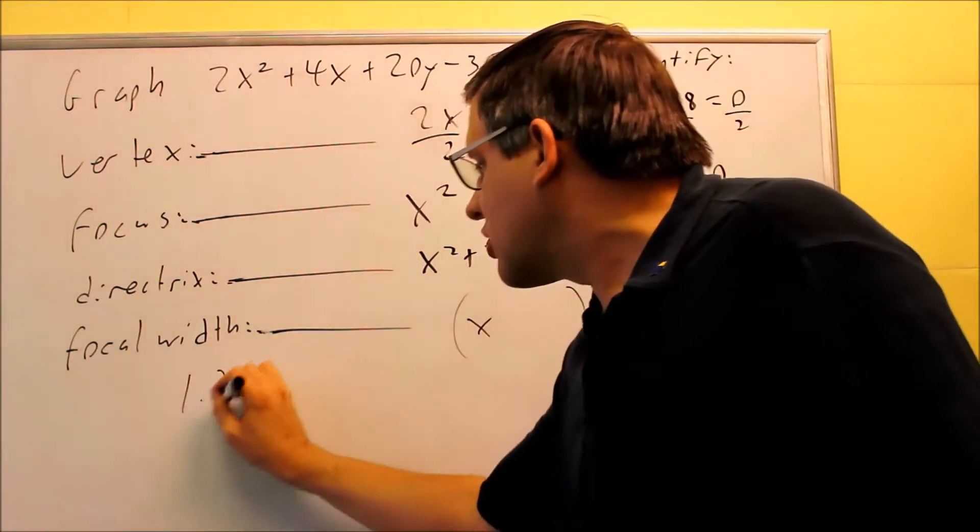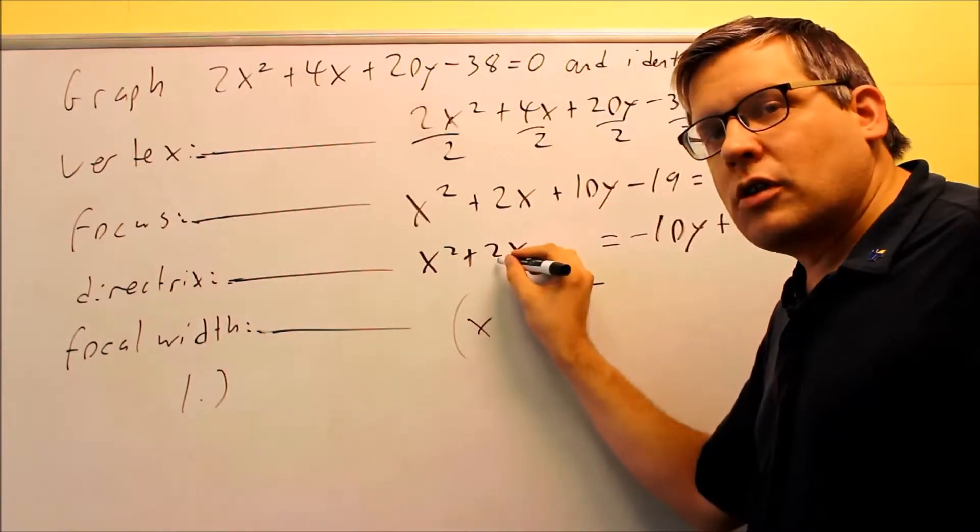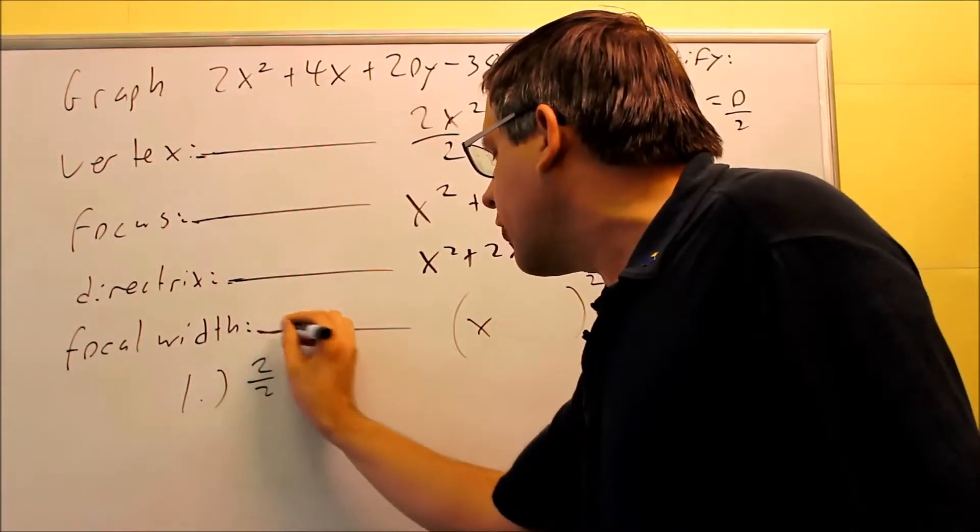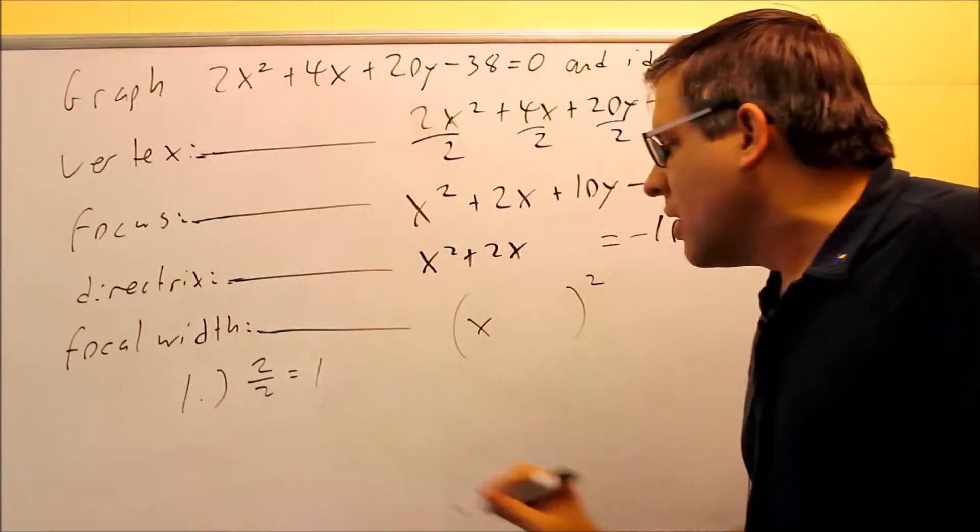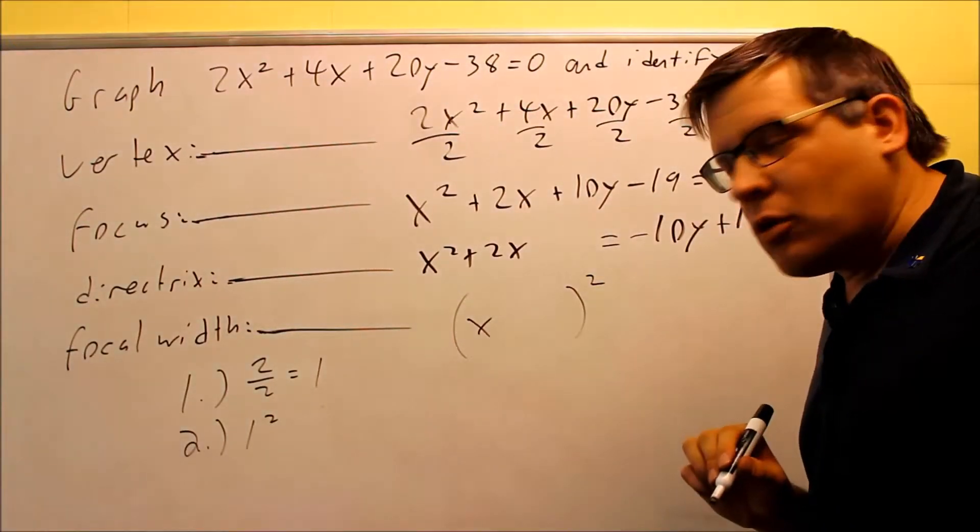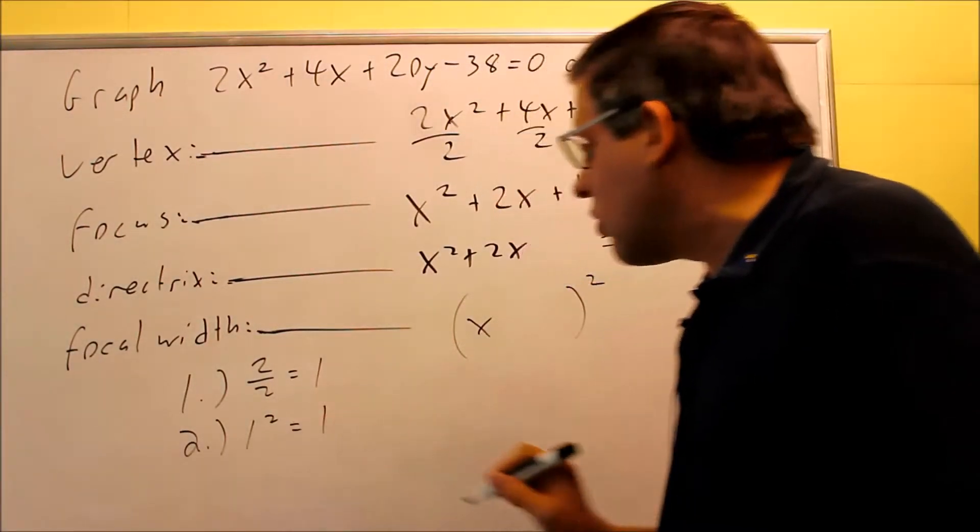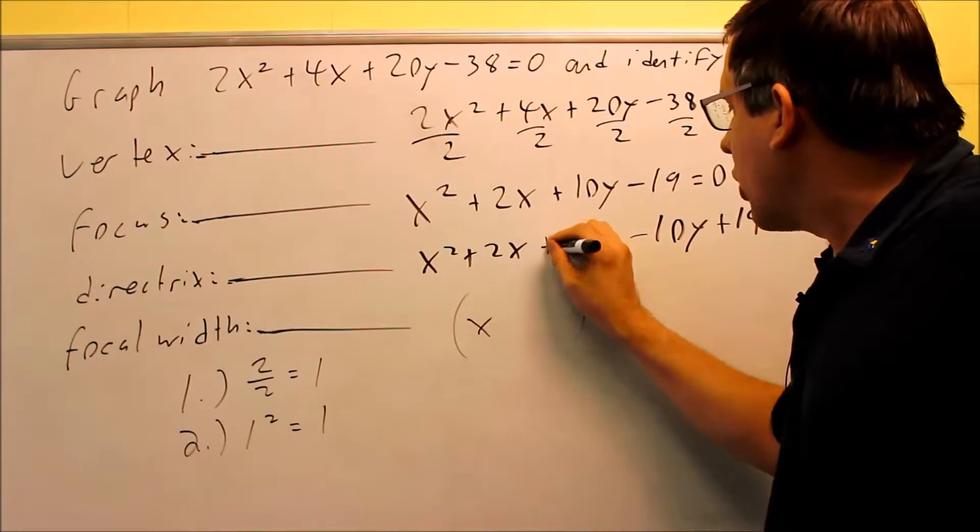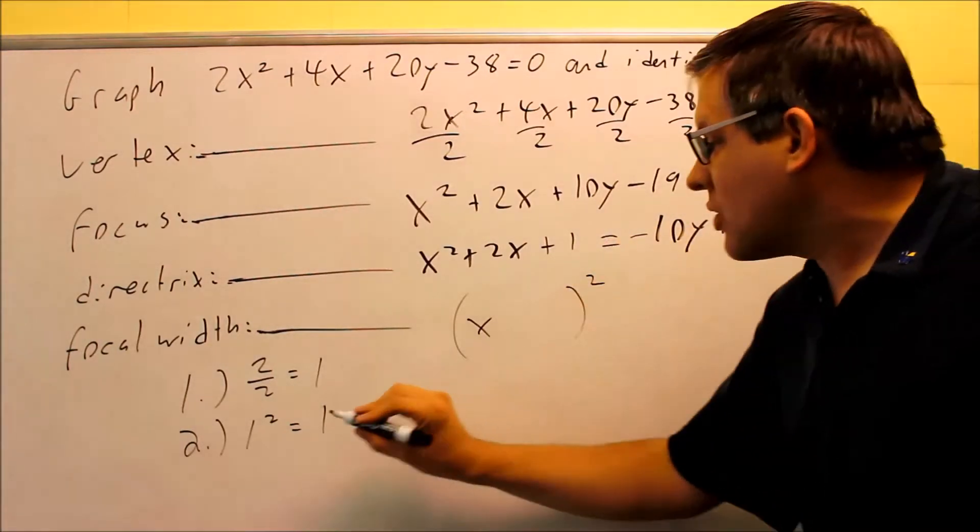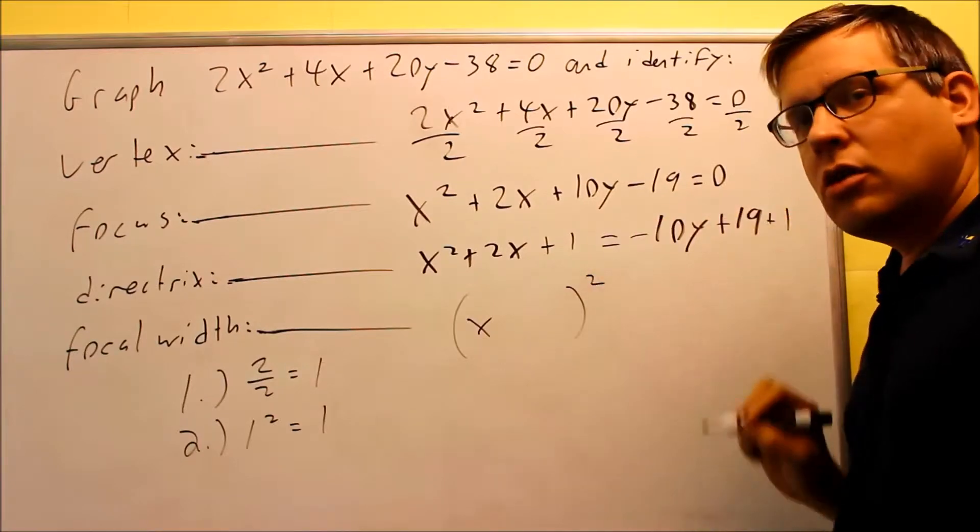Complete the square steps we'll do over here. Step number 1, take that number in front of the non-squared variable, divide by 2. Step number 2 requires you to square the answer you got in step number 1. So 1 squared is going to equal 1. That 1 we're going to add to both sides of the equation. So whatever you get in step 2 that's what you're adding to both sides.